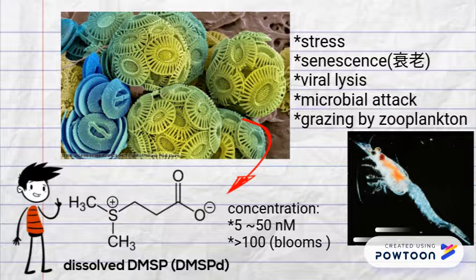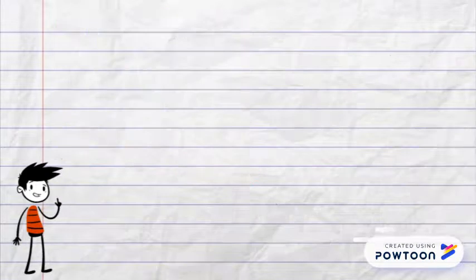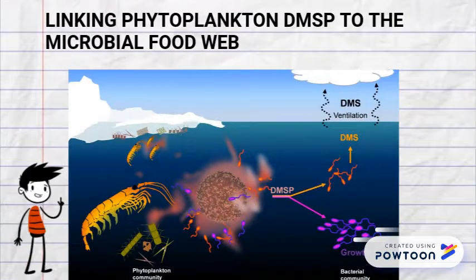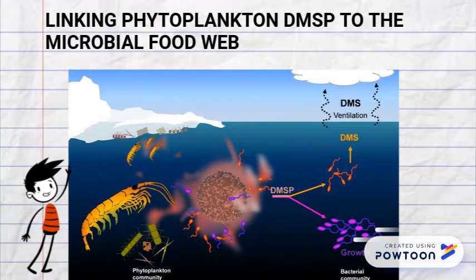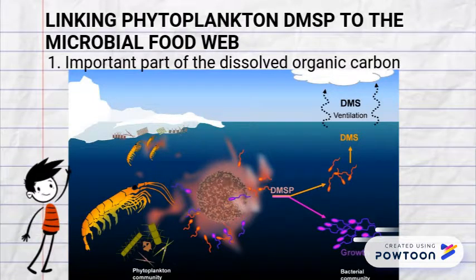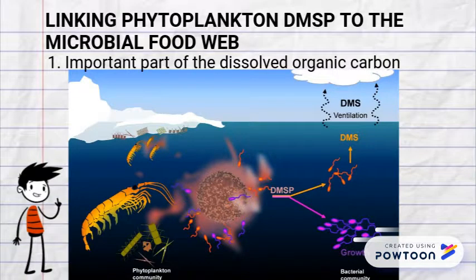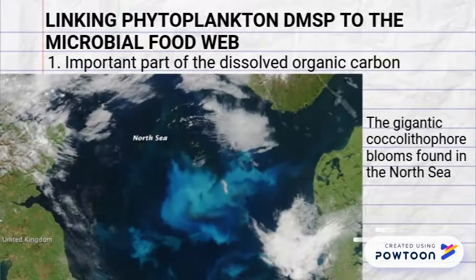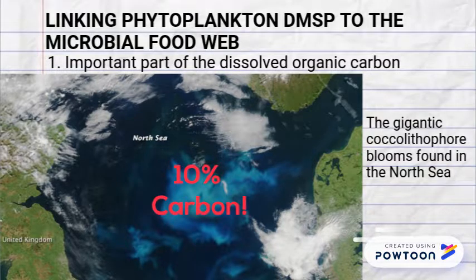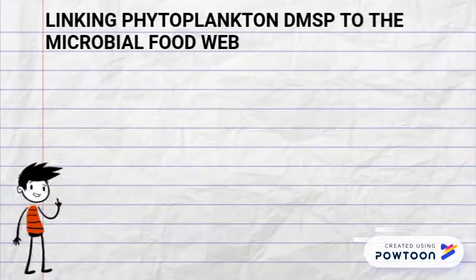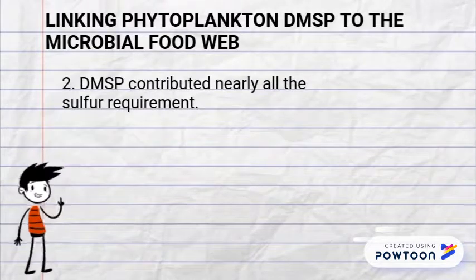DMSP concentration ranges from 5 to 50 nM, sometimes greater than 100 nM in blooms of DMSP-producing algae. No other single compound is known to contribute so much carbon and sulfur to the microbial food web. Since DMSP comprises 1 to 10 percent of the carbon in some algal species, it is an important source of dissolved organic carbon in the gigantic coccolithophore blooms found in the North Sea.